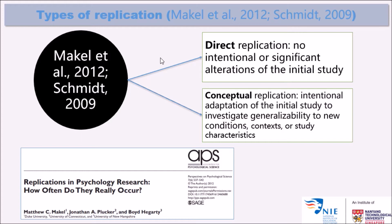An example would be that previous researchers used a certain approach to teach grammar because they claimed and provided evidence that this approach would result in the optimization of language learners' speaking ability. So, teaching grammar in that way results in the optimization of speaking ability of language learners.